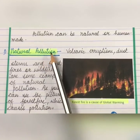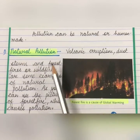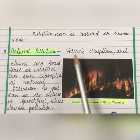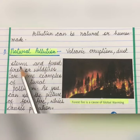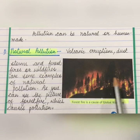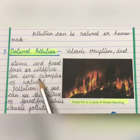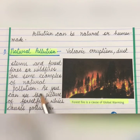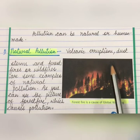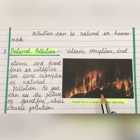Pollution can be natural or human-made. Volcanic eruptions, dust storms and forest fires or wildfires are some examples of natural pollution, as you can see in the picture of a forest fire which causes pollution.